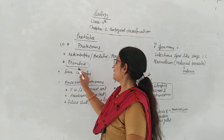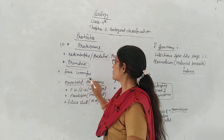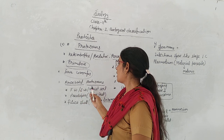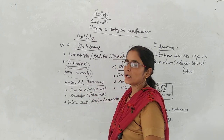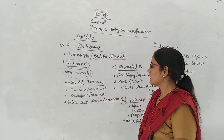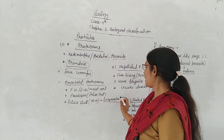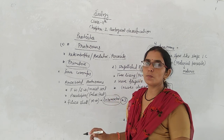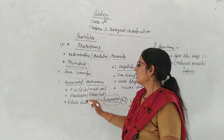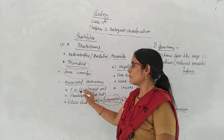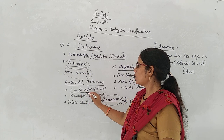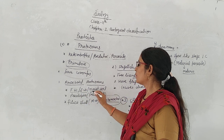There are mainly four major groups that we discuss. First is Amoeboid Protozoa. An example is Amoeba. They can live in fresh water, salty water, and moist soil.